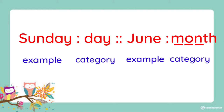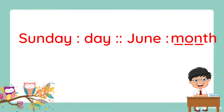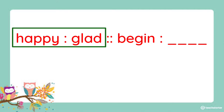So the complete set is Sunday is to day as June is to month. Another example. Happy is to glad as begin is to blank. As we can see, the first pair of words — happy and glad — have the same meaning, or they are synonyms.